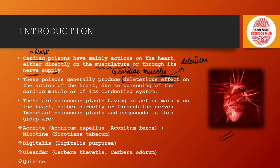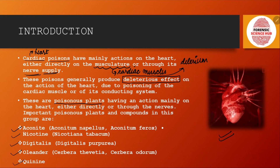These cardiac poisons can be obtained from poisonous plants. Some important cardiac poison-producing plants include Aconite, Nicotine, Digitalis, Oleander, and Quinine. In this particular video, we are going to discuss the Aconite plant.